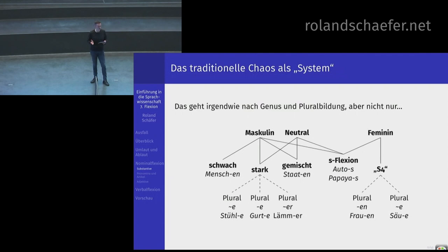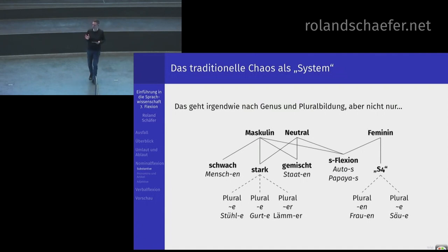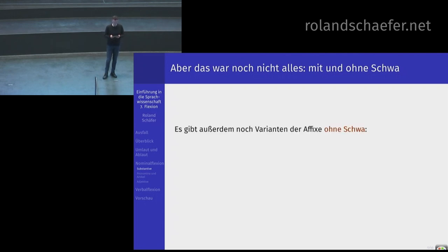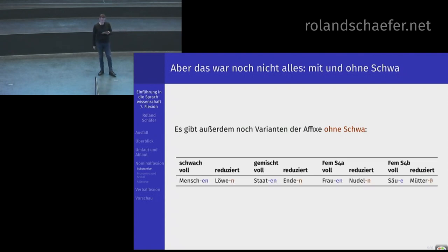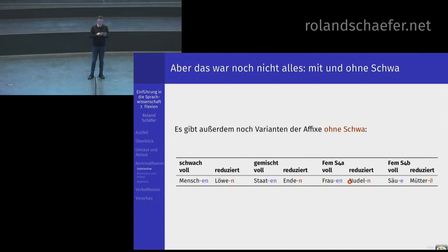Wenn Sie dieses traditionelle System sich als System vorstellen, kriegen Sie Folgendes: die Maskuliner können schwach, stark oder gemischt sein; die Neutra können nur stark und gemischt sein; die Femininer haben eine eigene Klasse; und alle Maskuliner, Neutra und Femininer können auch in der S-Flexion sein – also die Autos, die Papayas. Irgendwie scheint die Pluralbildung maßgeblich zu sein für die Einteilung in diese Klassen.